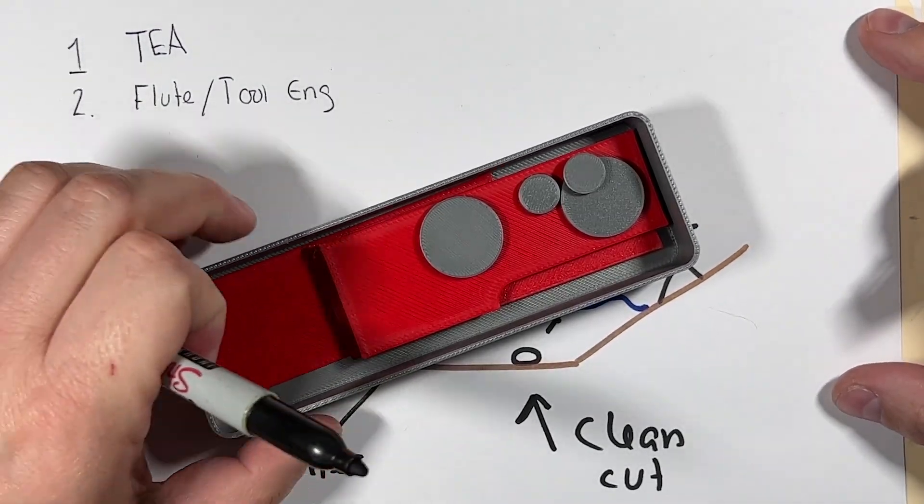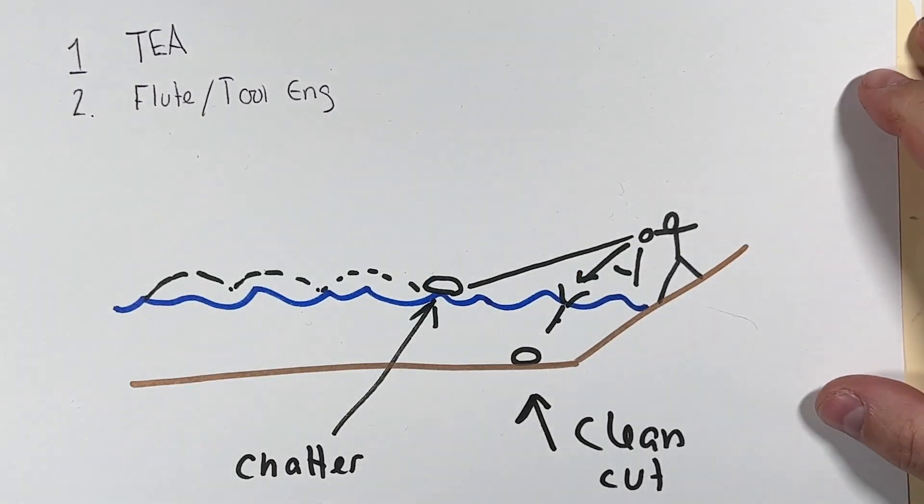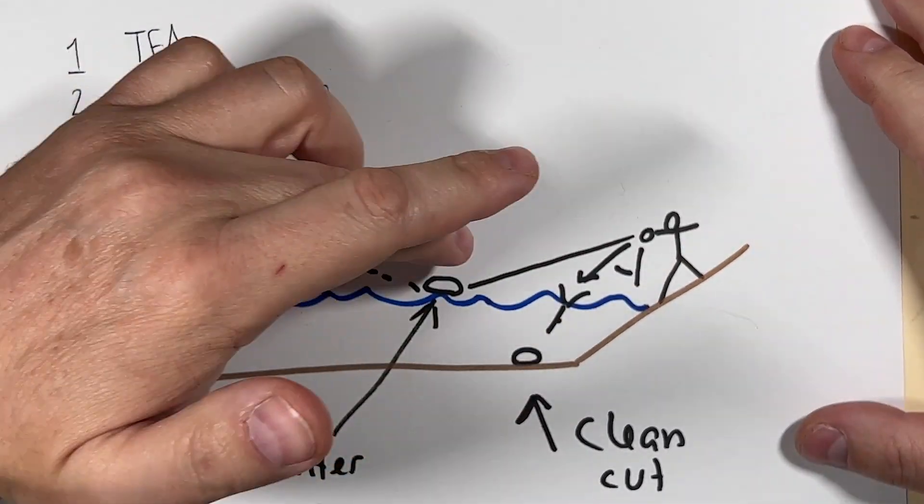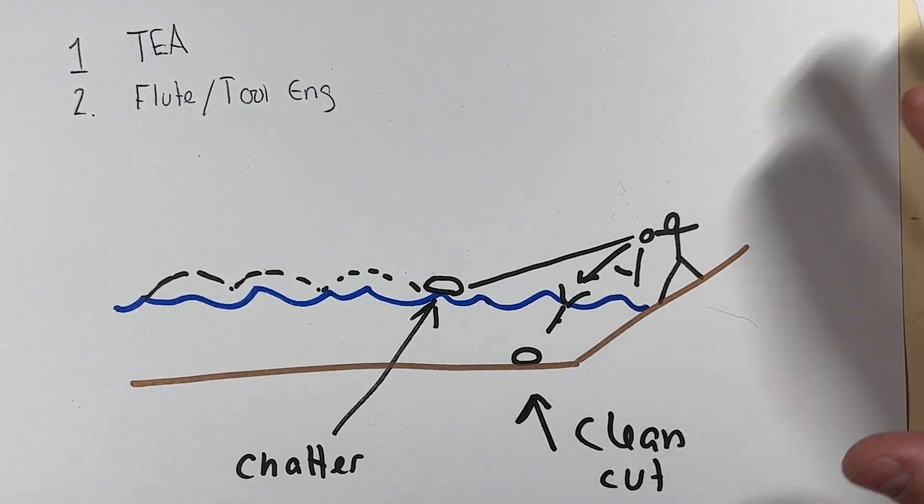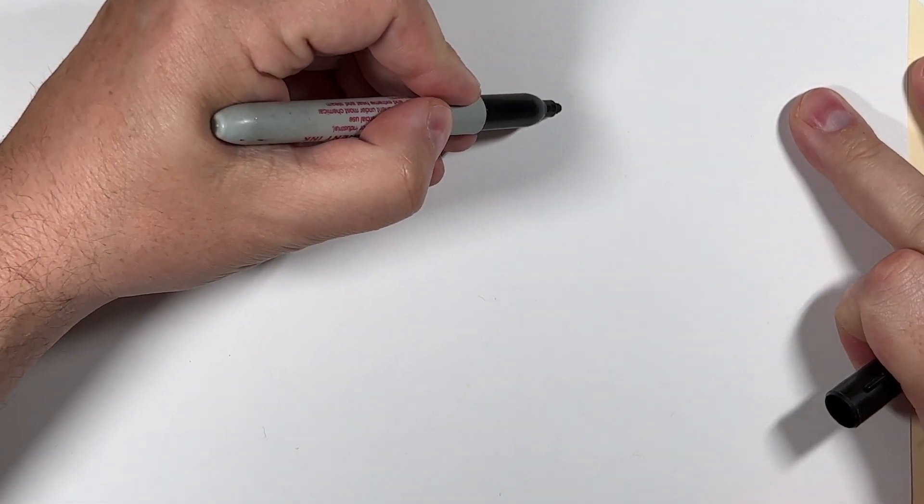We'll talk about both of these ideas here in a second. I actually printed out some pieces which I'm going to show you guys after I cover this little PDF that I found online. So this is what I want to talk about. This is tool engagement angle. We'll talk about the flute engagement. Why don't we do that real quick right now just to give you guys a quick overview.